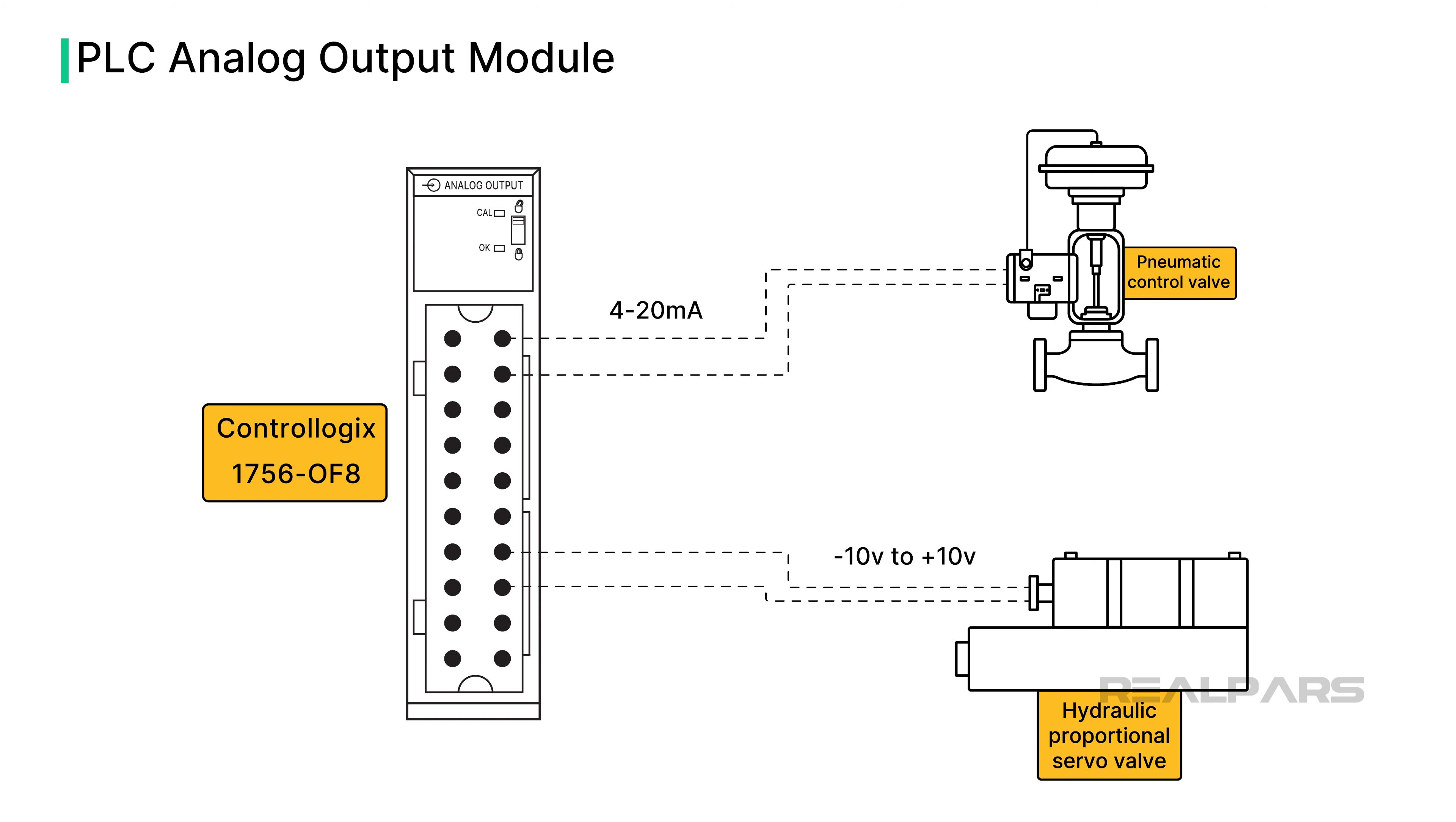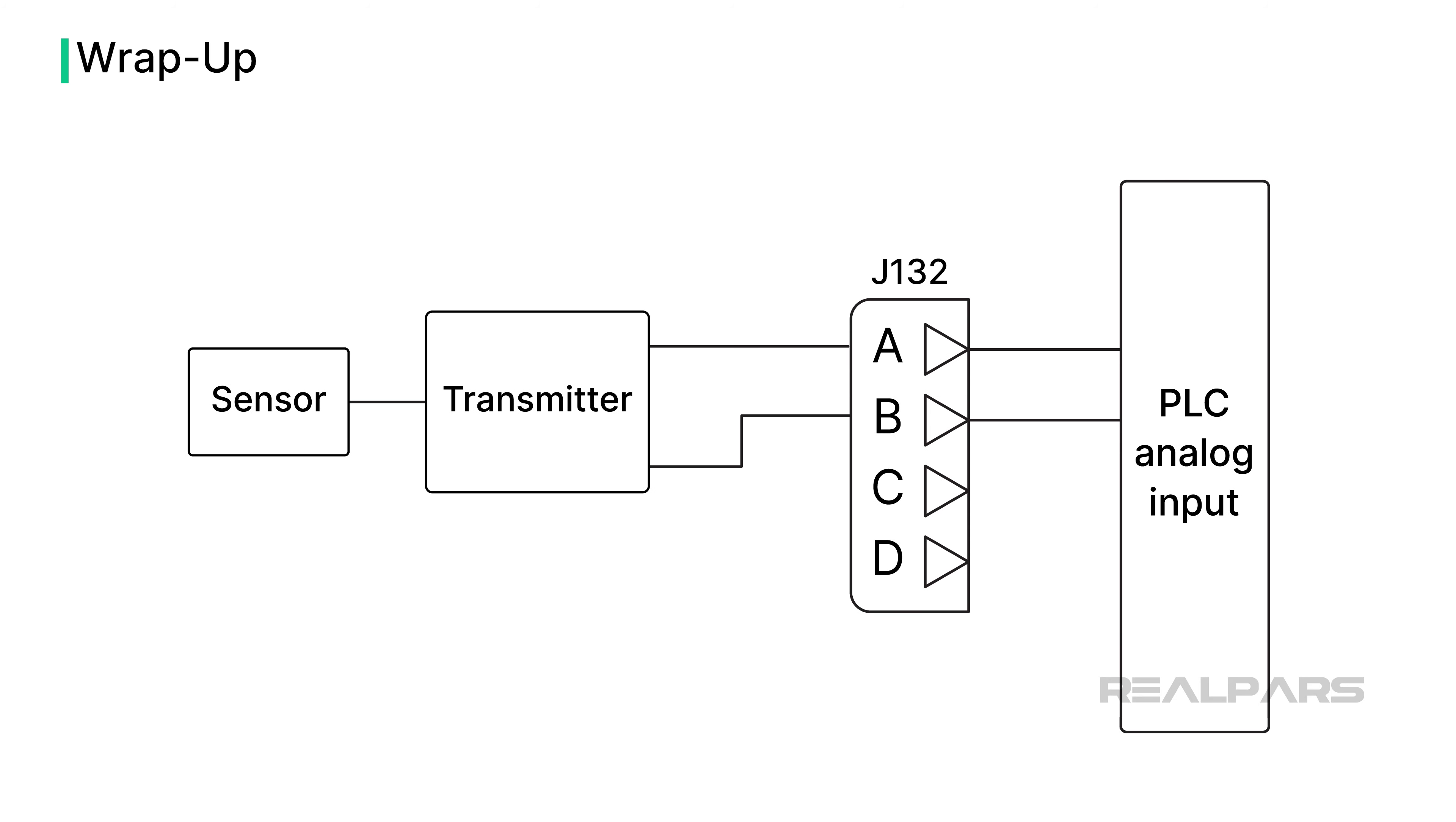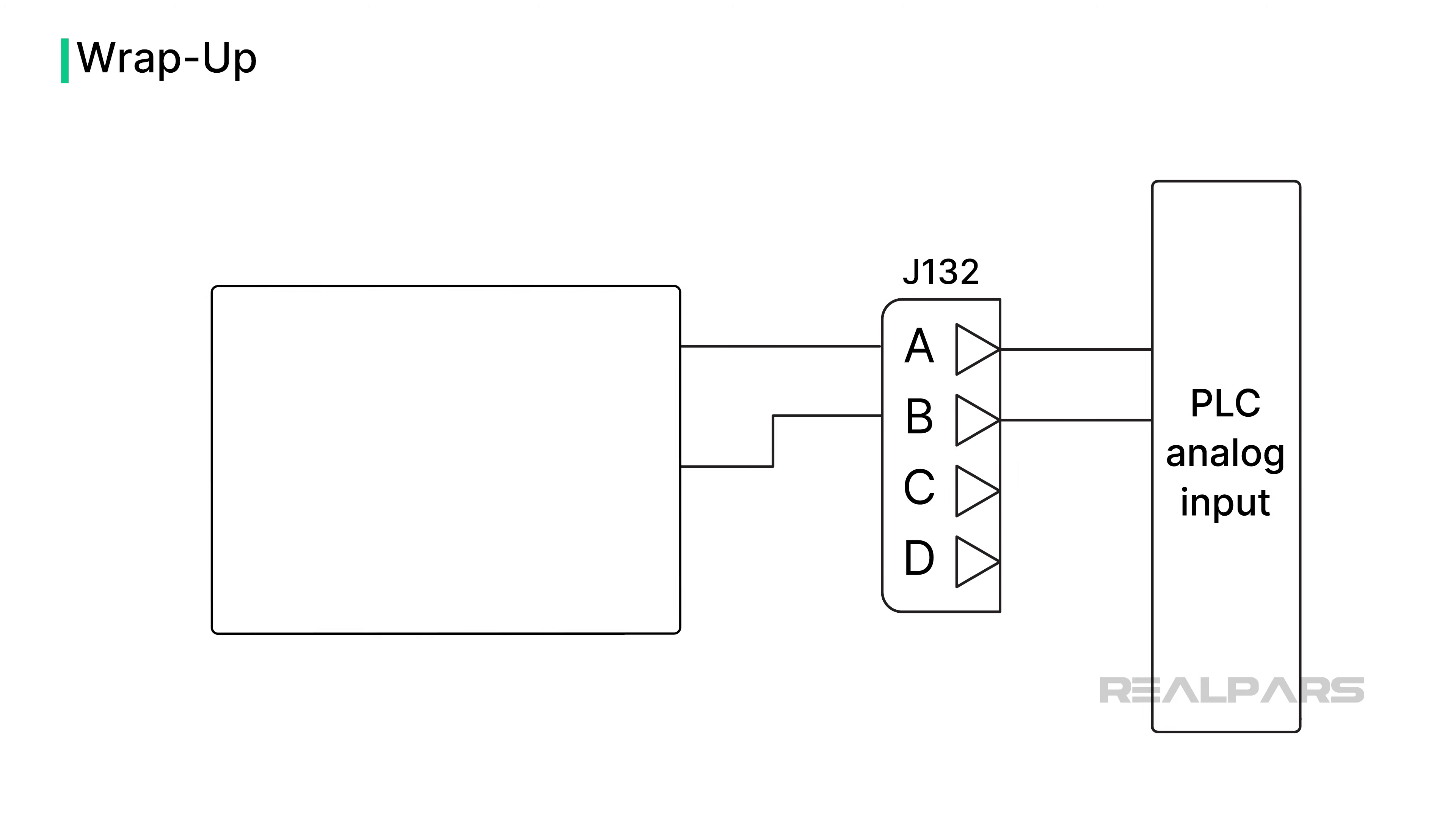That should do it for this video. Okay, let's review. A digital signal has only two possible conditions, while an analog signal has infinite possible conditions. Transmitters produce voltage or current analog signals, representing process variables such as pressure and temperature.